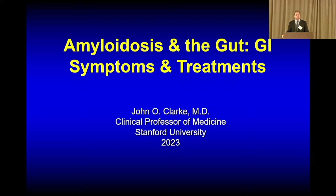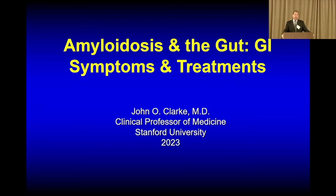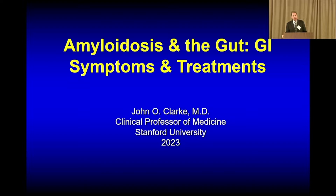We're fortunate to have John Clark. He's a gastroenterologist, professor of medicine at Stanford University. He's a well-known expert in diseases of the esophagus, but he's become interested in amyloid and recently participated in a panel where we're trying to define appropriate endpoints — how do we determine that patients with various organs involved with amyloid are actually getting better? Professor Clark, amyloid and the GI tract.